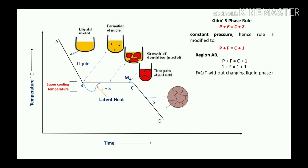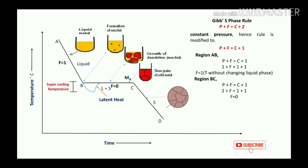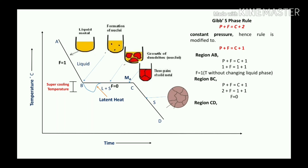For region B to C using P + F = C + 1: from B to C it is the complete solidification process, so there are two phases — liquid plus solid. Therefore 2 + F = 1 + 1 (single-component pure metal), giving F = 0. This means there are no variables, so temperature remains constant — it is a constant-temperature solidification process, from the starting point to the end point of solidification.